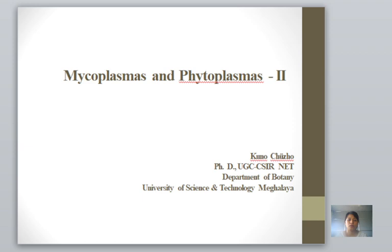Just a brief recap on what these microorganisms are. I covered in the introduction: general characteristics, structures, forms, mode of reproduction, and important diseases caused by mycoplasmas. The general characteristics, morphology, and reproduction of mycoplasmas are similar to phytoplasmas, so you can check the previous video. I will not go into detail to avoid repetition. In this session, we will discuss about phytoplasmas.